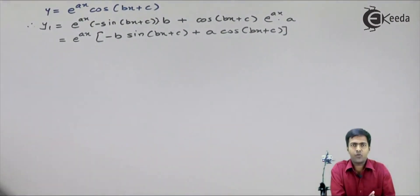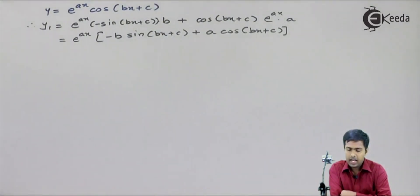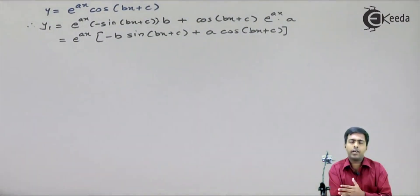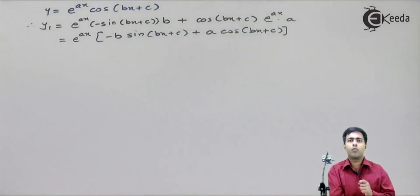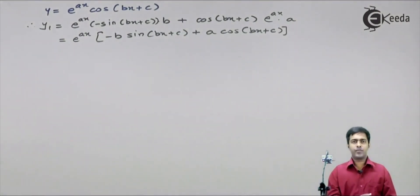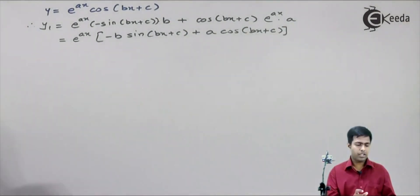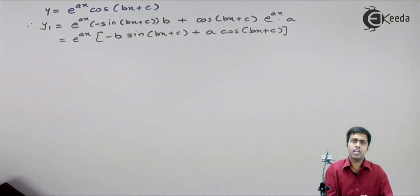Now if I try to find out the value of y2 from this value of y1, I will get more terms in y2, and hence more terms in further derivatives, making it very difficult to find the nth derivative. So to find the nth derivative of this function, we will use the method of a triangle.